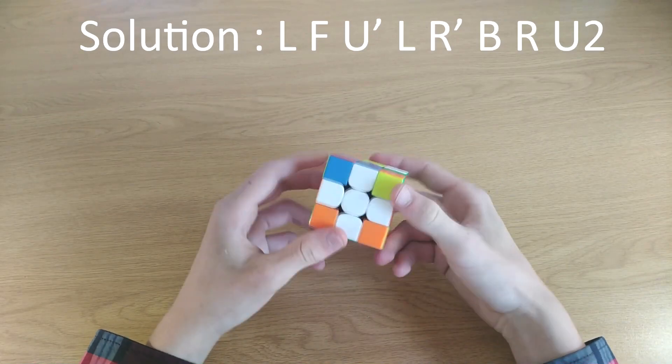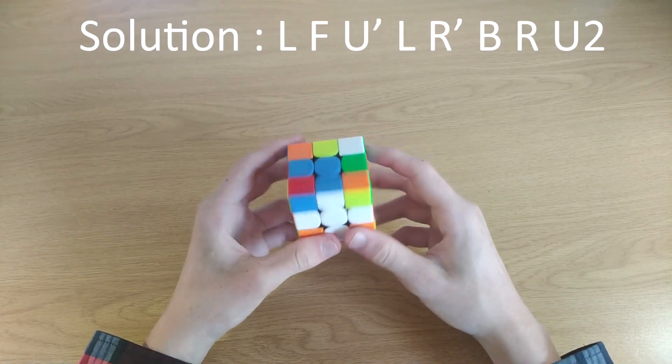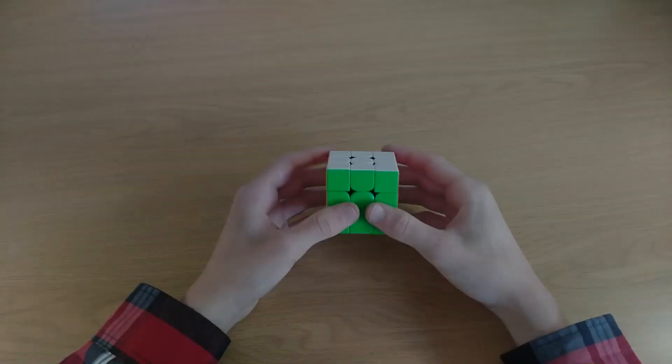And then just finish off with a D2, or I mean U2 technically, yeah, with a U2. And that solves the cross. Second example.